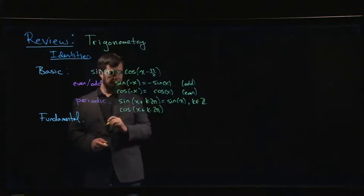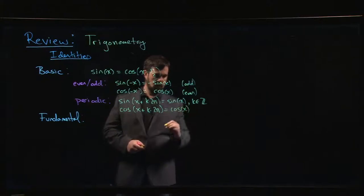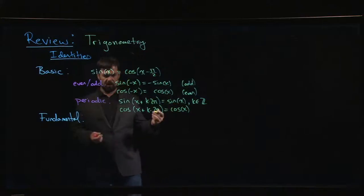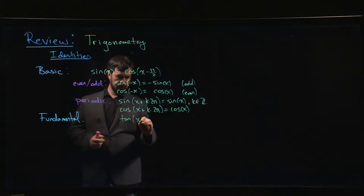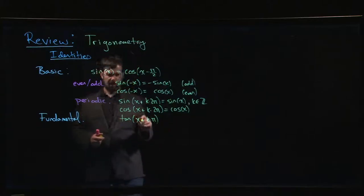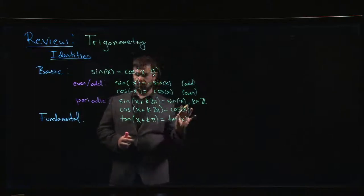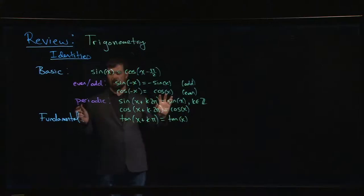Adding any multiple of 2 pi gets you back to where you started. Same is true for secant and cosecant. For tangent and cotangent, you'll notice that the period is a little bit shorter. The period for tan is, in fact, just pi. And that's valid for any x. For all these identities, they hold true for any angle x that you want to put in.